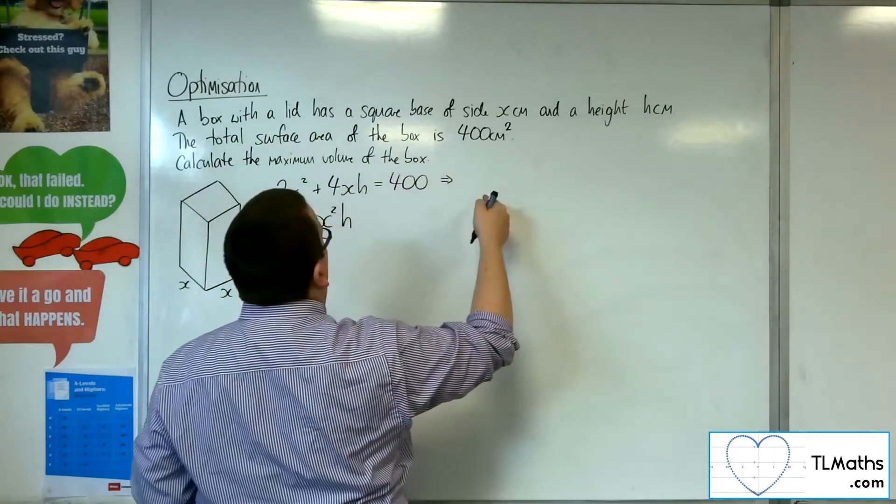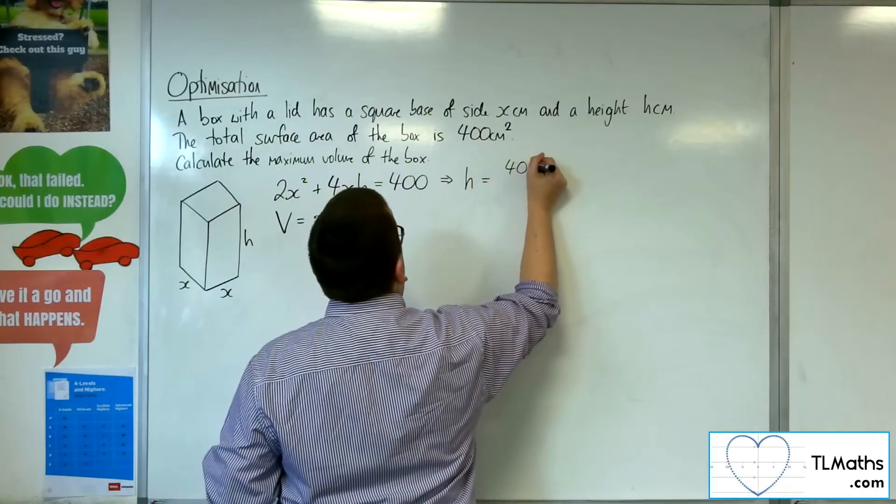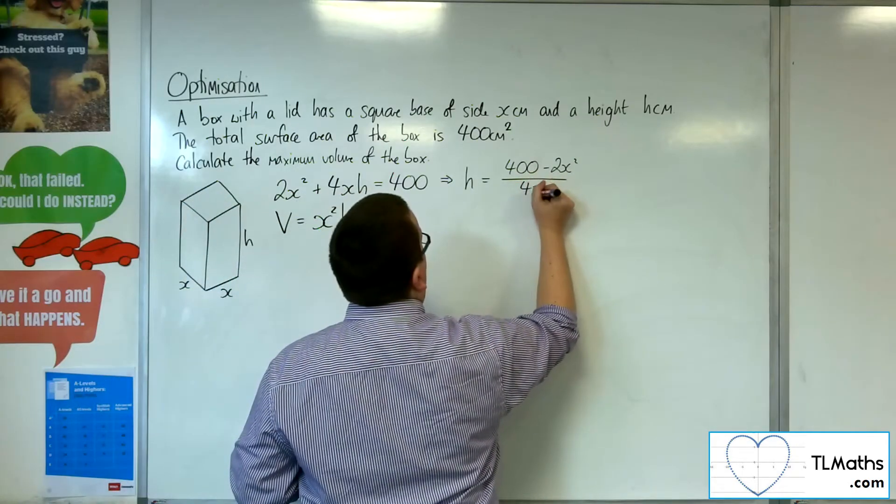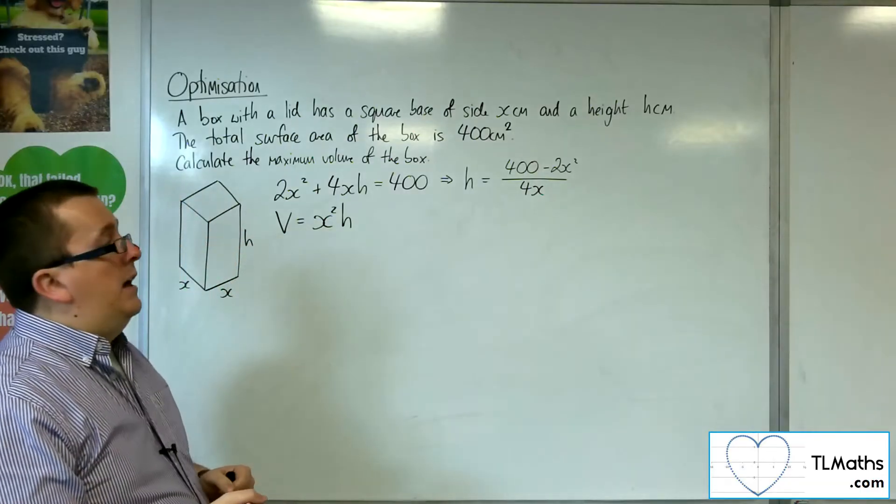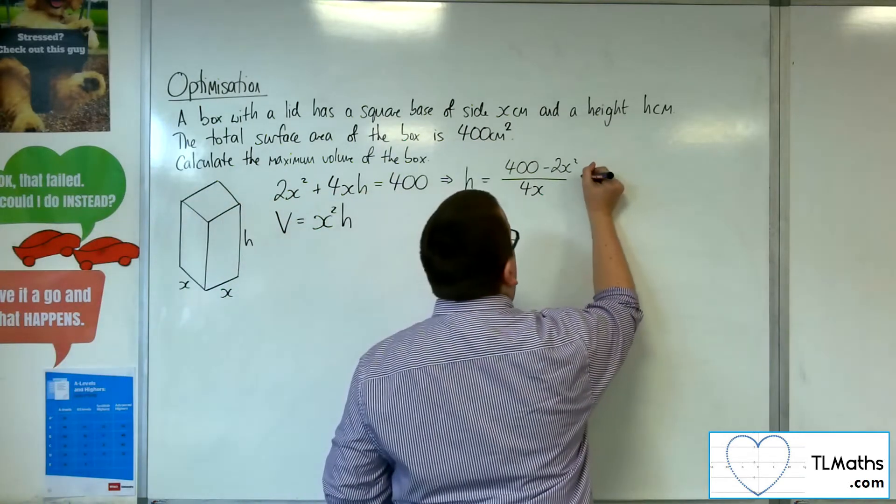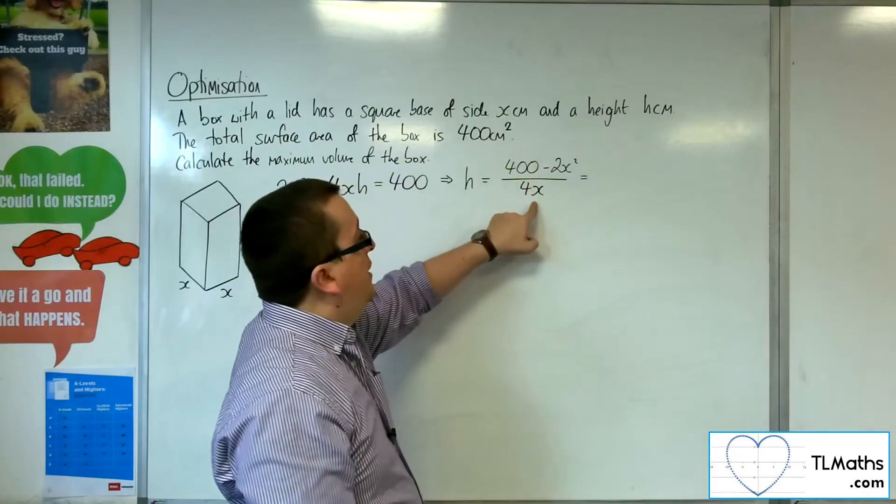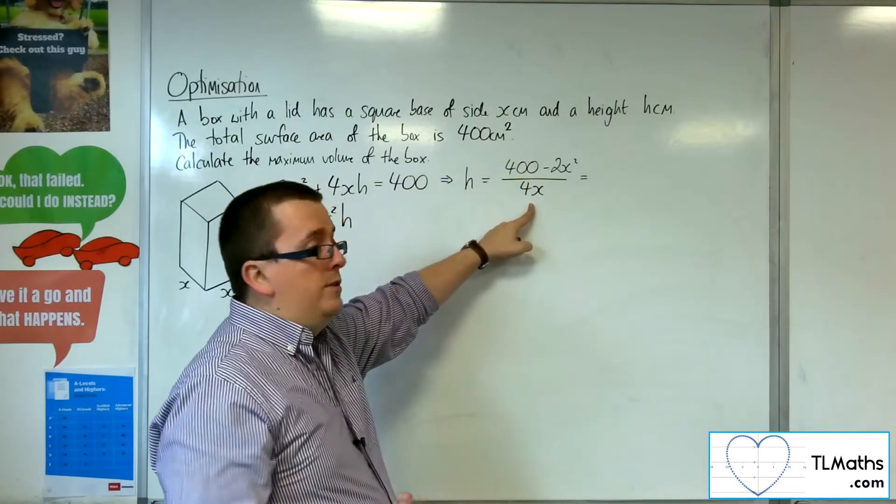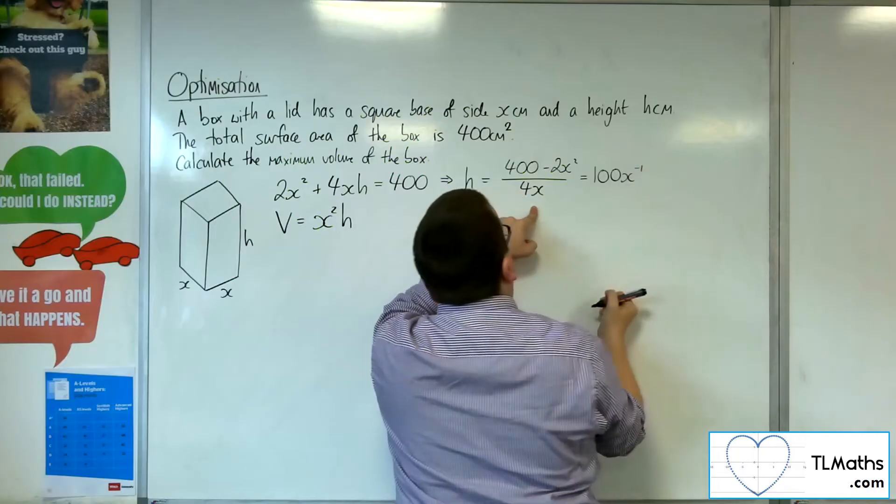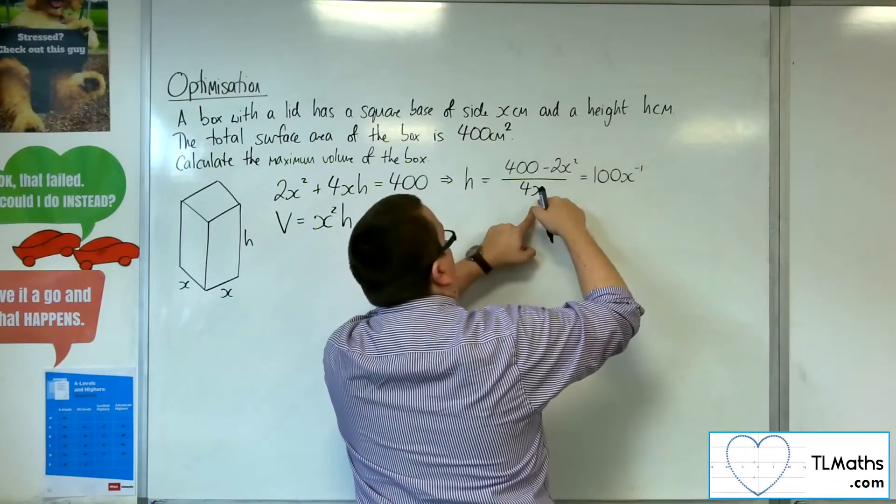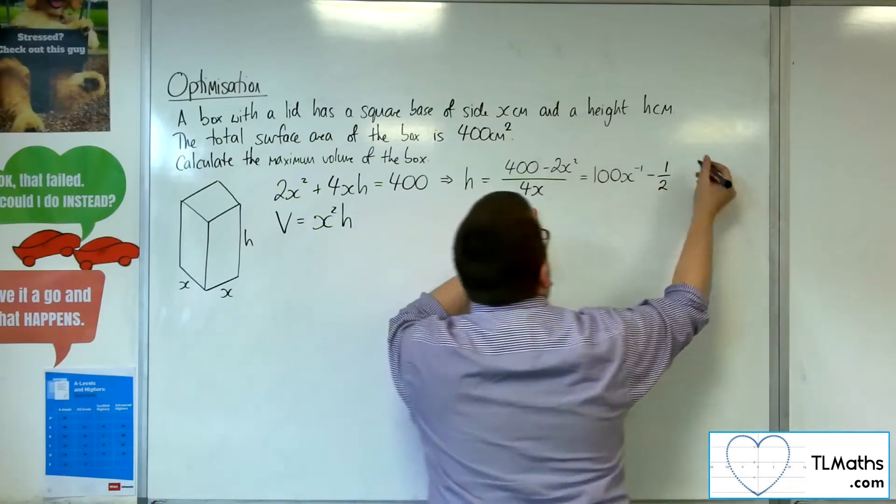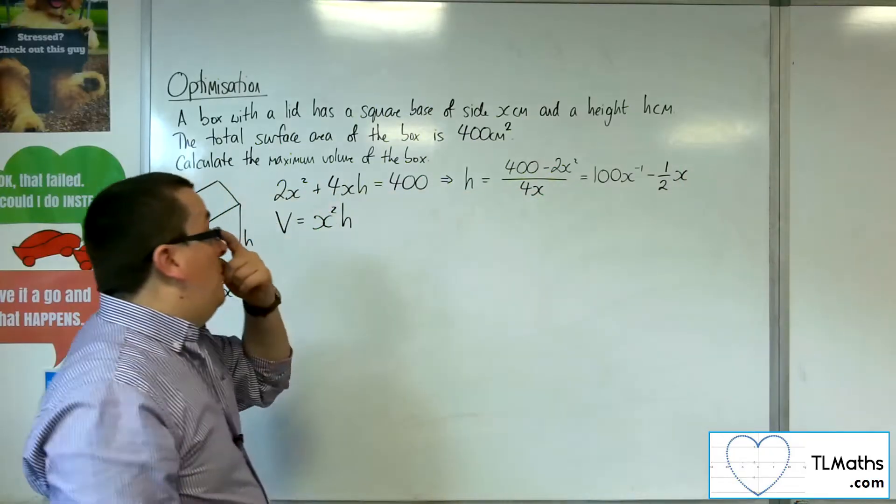I'm going to rearrange this first equation to get h equals. If I subtract the 2x squared from both sides, I get 400 minus 2x squared, and then divide both sides by 4x. This can be simplified down. I've got 400 divided by 4x, so 400 divided by 4 is 100, giving us 100 over x, which is 100x to the minus 1. Then we've got minus 2x squared divided by 4x. So minus 2 divided by 4 is minus 1 half. x squared divided by x is just x. So h equals 100x to the minus 1 minus half x.